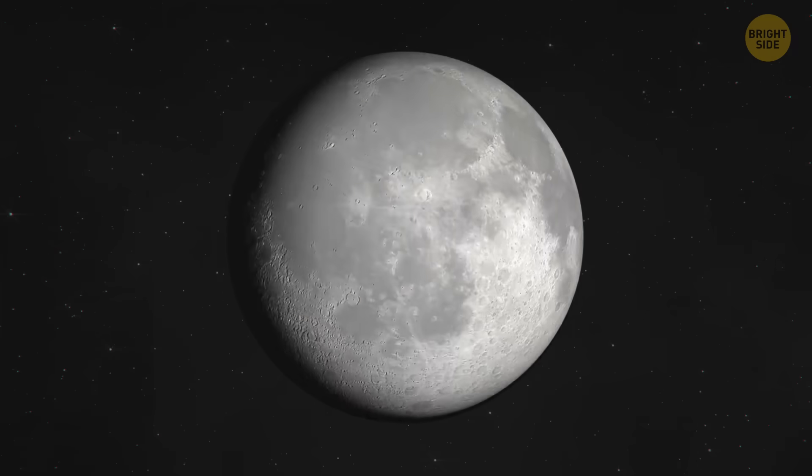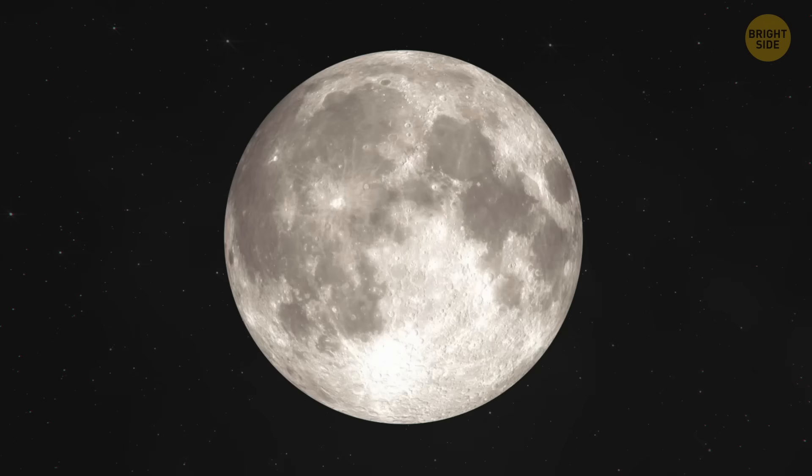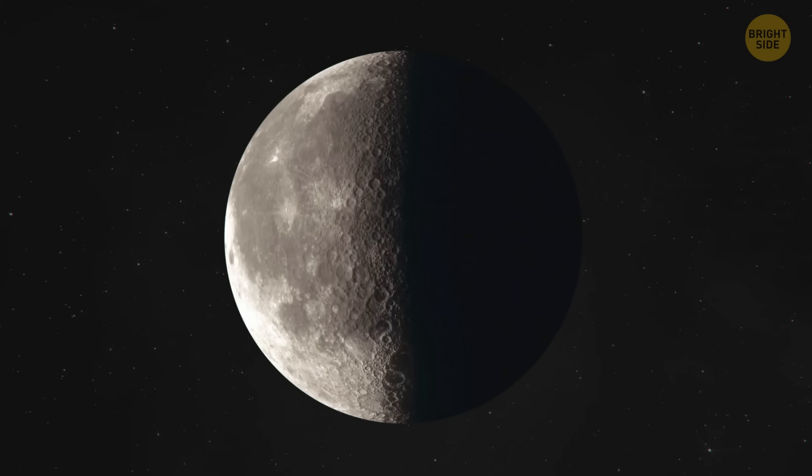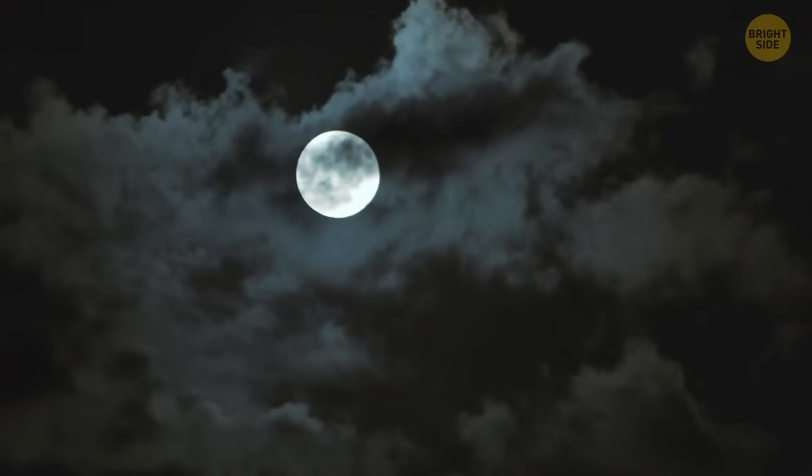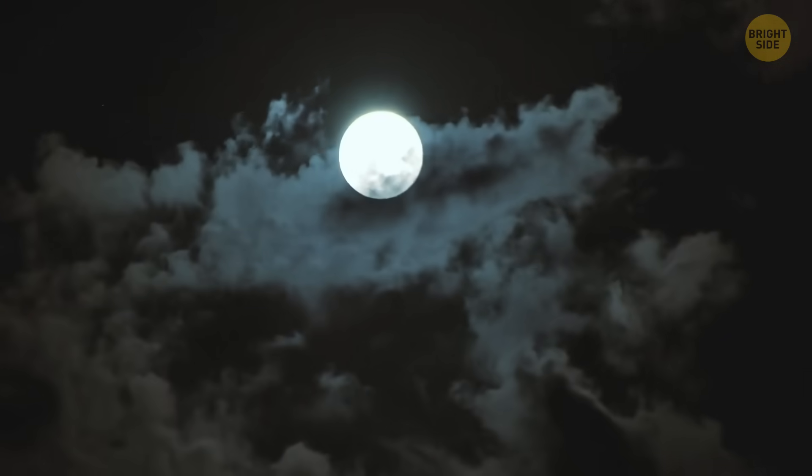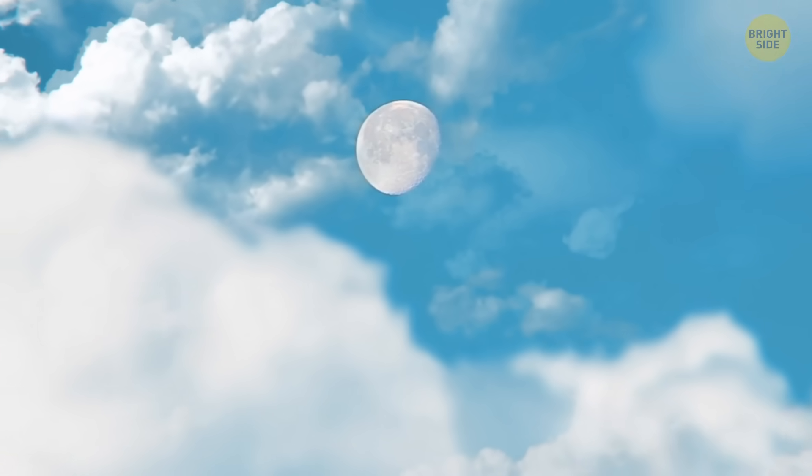The Moon has several phases. For example, new, full, or crescent Moon, first and last quarter. But whatever the satellite looks like, you can always find it in the night sky, and sometimes even during the day.